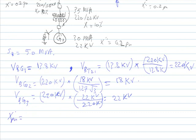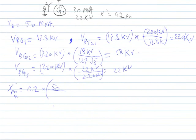The per-unit reactance of generator number one is: the old per-unit value of 0.2, multiplied by the new MVA of 50 over the old MVA of 20, then multiplied by the square of the voltage bases — the old voltage of 13.8 kV over the new base of 13.8 kV. This gives 0.5 per unit.